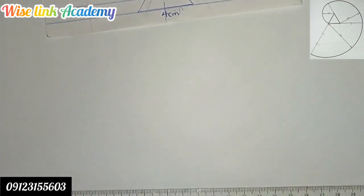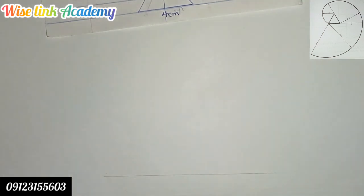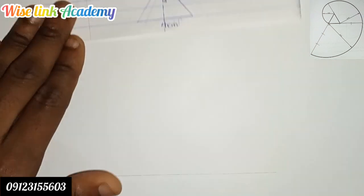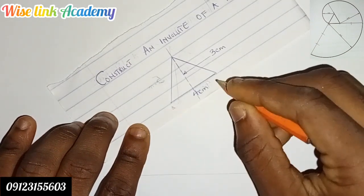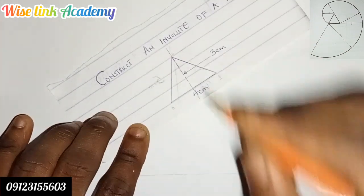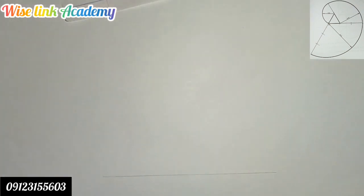Take your t-square and draw out the horizontal line this way. You can see my horizontal line. From this point to this point is 4 centimeters. Let me mark my points: one, two, three, four.